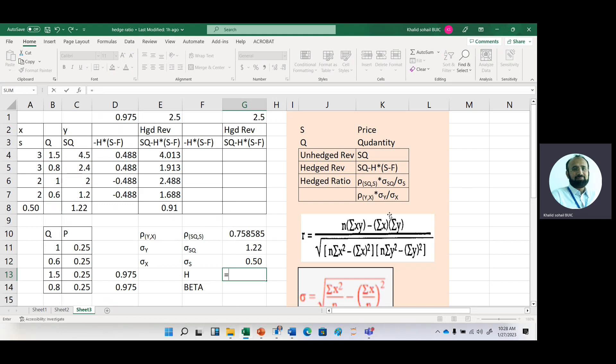Now just using this hedge ratio formula, correlation between SQ and S multiplied by variability in unhedged revenue divided by variability in price. So our hedge ratio, 1.85, we have already calculated it manually as well. Or we can get this hedge ratio with the help of